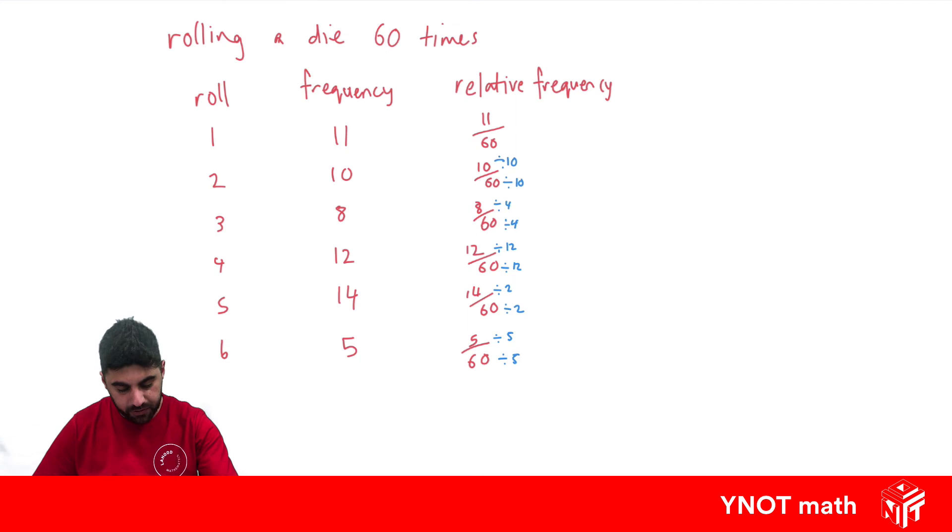So let's just simplify all those. So here we'll get 1 over 6. This one we're getting 2 out of 15. Here we get 1 out of 5. This one we get 7 out of 30, and here we get 1 out of 12.